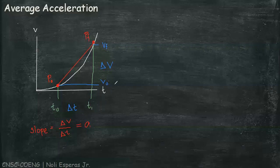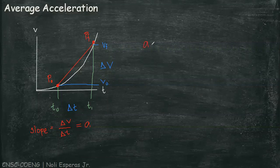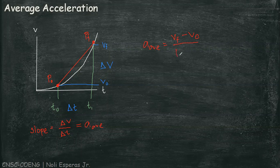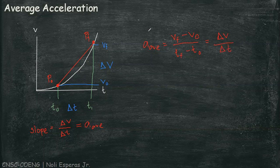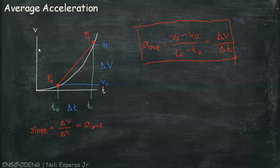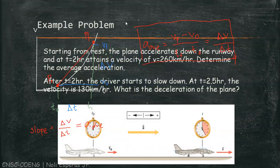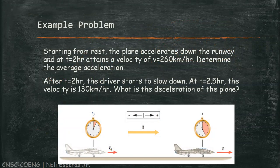So, this gives us the formula for acceleration or average acceleration. Our acceleration is the difference between the velocities over elapsed time, or delta V over delta t. Okay, so let's have an example.